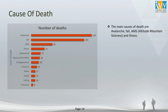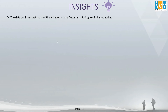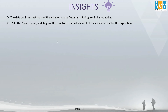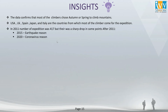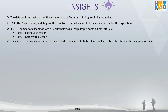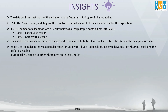Now let's review the overall analysis and insights. The data confirms most climbers choose autumn and spring to climb mountains. USA, UK, Spain, Japan, and Italy are the countries from which most climbers come. In 2011 the number of expeditions was 417, but there was a sharp drop due to the 2015 earthquake and the 2020 coronavirus. Mount Amadablam and Mount Chooyu are the best picks for climbers wanting to complete their expedition successfully. Route S. Col SE Ridge is the most popular route for Mount Everest but is difficult due to the unstable Khumbu Icefall; N. Col NE Ridge is a safer alternative.